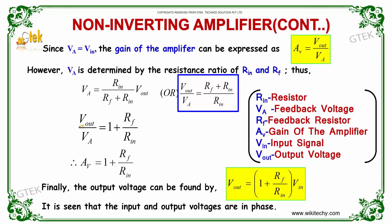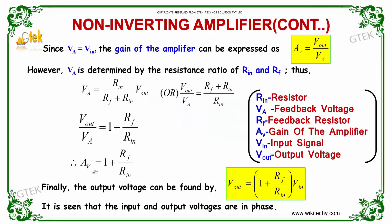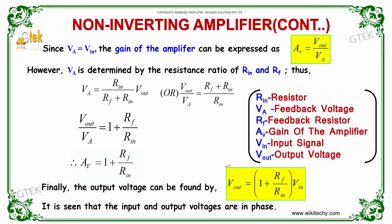From this equation, we get VOUT divided by VA equals 1 plus RF divided by RN. If we take RN as the common denominator, RN divided by RN equals 1, so we have represented 1 plus RF divided by RN. Therefore, AV — the gain of the amplifier — is equal to 1 plus RF divided by RN. Finally, the output voltage can be found by VOUT equals (1 plus RF divided by RN) multiplied by VIN.